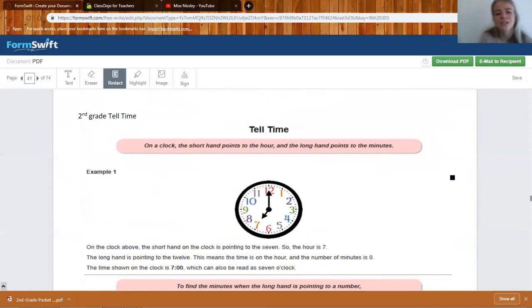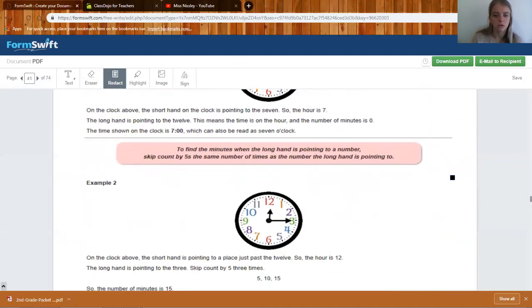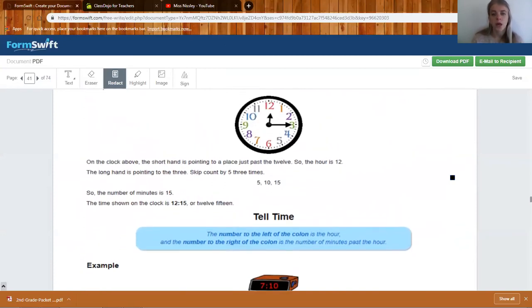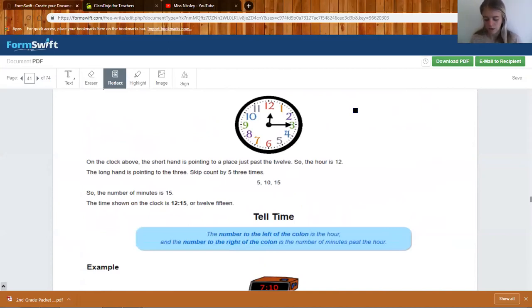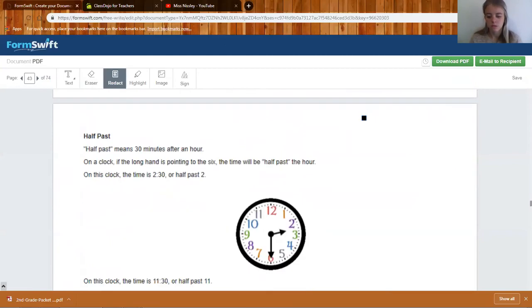We will go over this last one, tell time. On a clock the short hand points to the hour and the long hand points to the minutes. Here's some examples. I'm going to stop with this example real quick though because don't forget that when we point to each one of these numbers you count by fives. So let's point to it and count together. 5, 10, 15, 20, 25, 30, 35, 40, 45, 50, 55, 60.